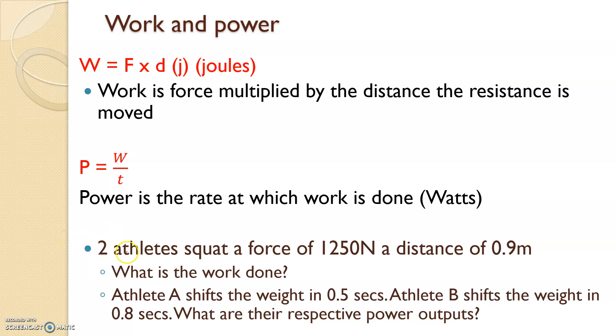Let's give a practical example. Two athletes squat a force of 1250 newtons at a distance of 0.9 meters. This is not a forward direction, this is an up and down direction. What is the work done? Calculate the work done. Second part of the question: Athlete A shifts the weight in 0.5 seconds. However athlete B shifts the weight in 0.8 seconds. What are their respective power outputs? If we understand these equations we can answer this question.